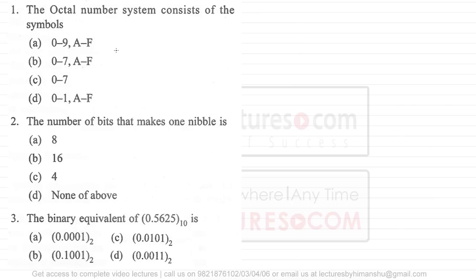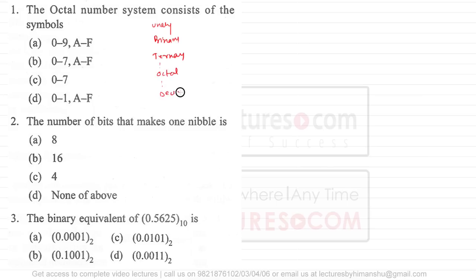Question number one is saying the octal number system consists of the following symbols. We have different types of number systems: unary, binary, ternary, octal, decimal, hexadecimal, and so on — there can be a number of number systems.